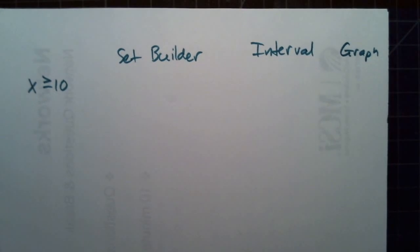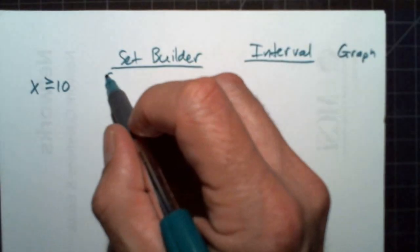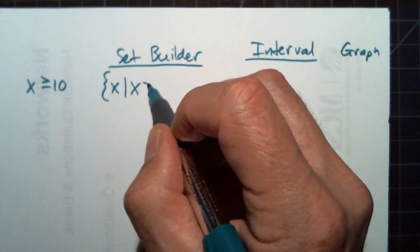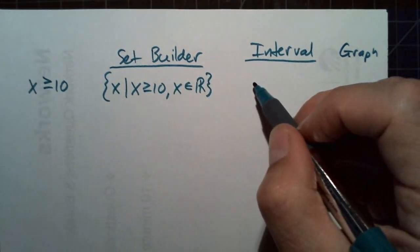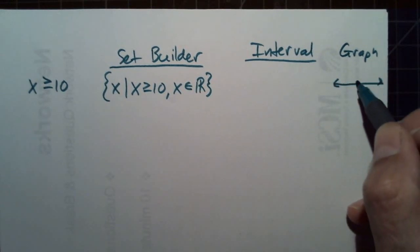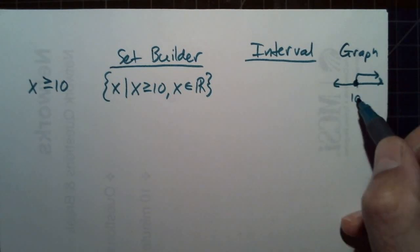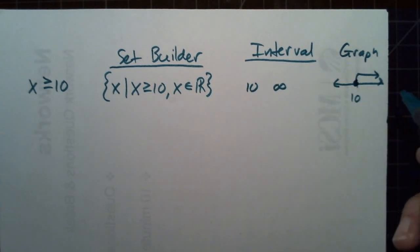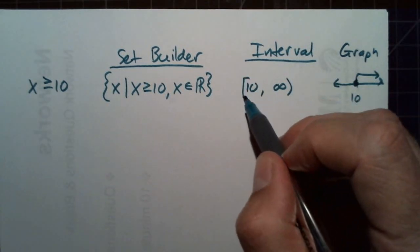Write this set in set builder and interval notation. Set builder: all numbers x such that x is greater than or equal to 10 and x is a real number. Interval notation: we're at 10, we include 10 and go to the right. The left endpoint is 10, the right endpoint doesn't exist so we say infinity. Since we can be equal to 10, we use a bracket.